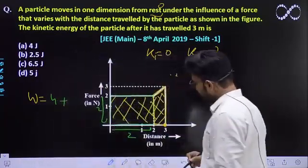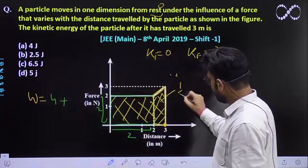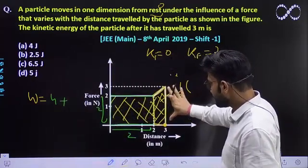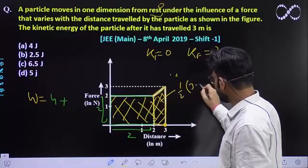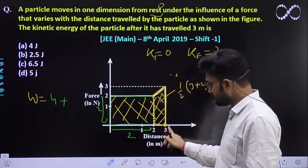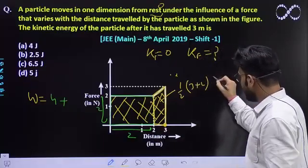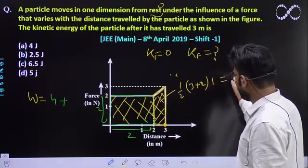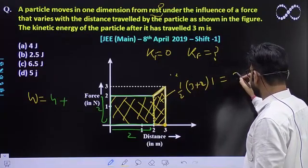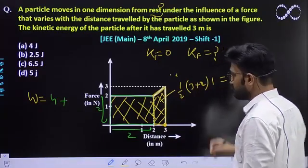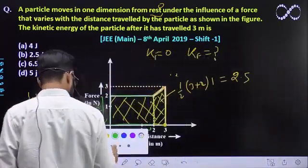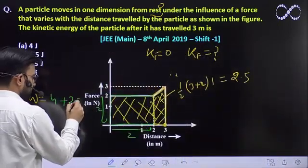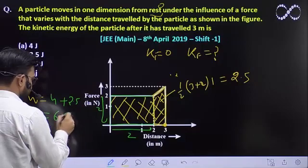Plus we'll also calculate the trapezium's area. What will that be? Half into sum of the parallel sides. Sum of the parallel sides is 3 plus 2. The altitude is 3 minus 1 which is 1. So we'll be getting 5 by 2 which is 2.5. So total becomes 6.5.